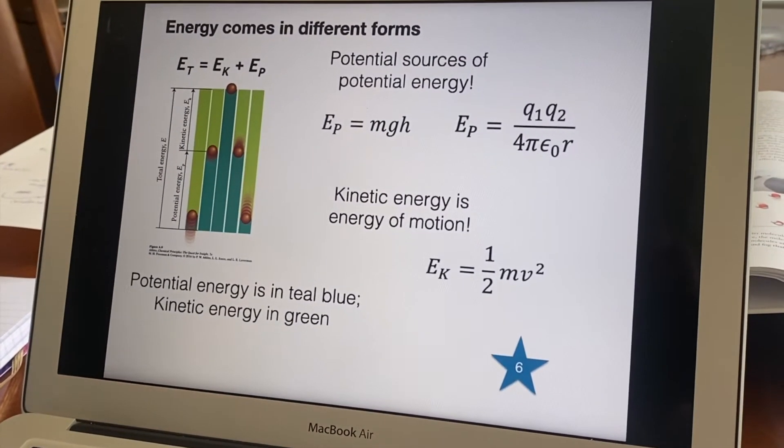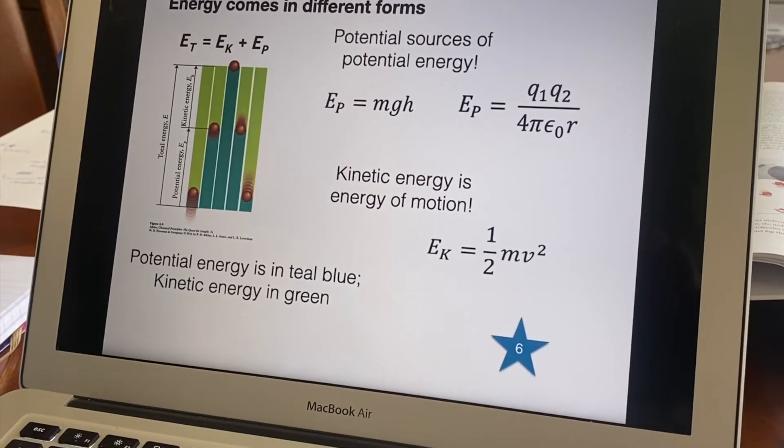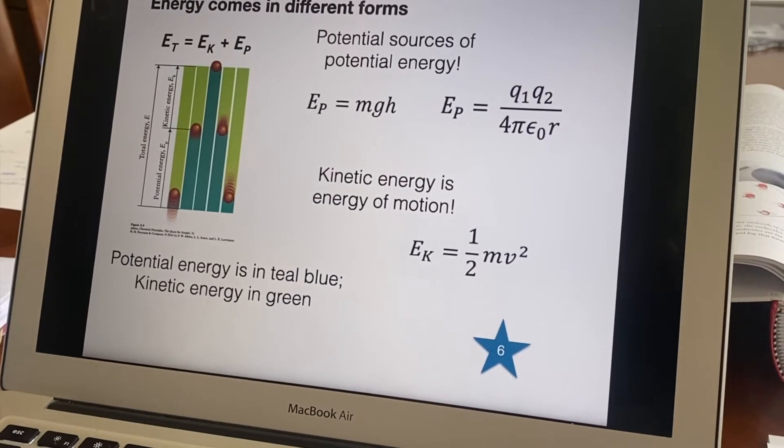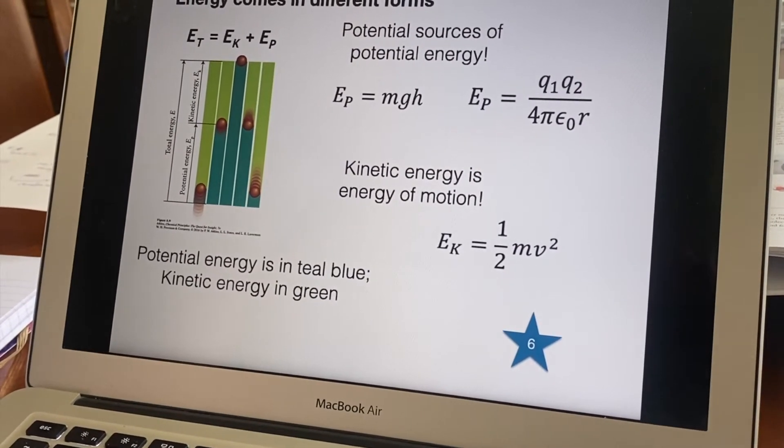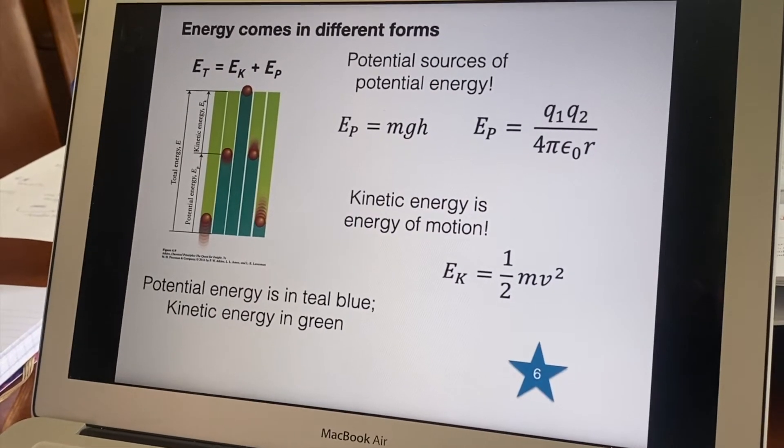When it reaches its very peak before it starts to come back down, it's as if it pauses in midair. It's pausing just for an instant. It has no kinetic energy because it is not moving up or down at the apex, at the very peak of its arc. So it's all potential energy and it is as high up as it can go.